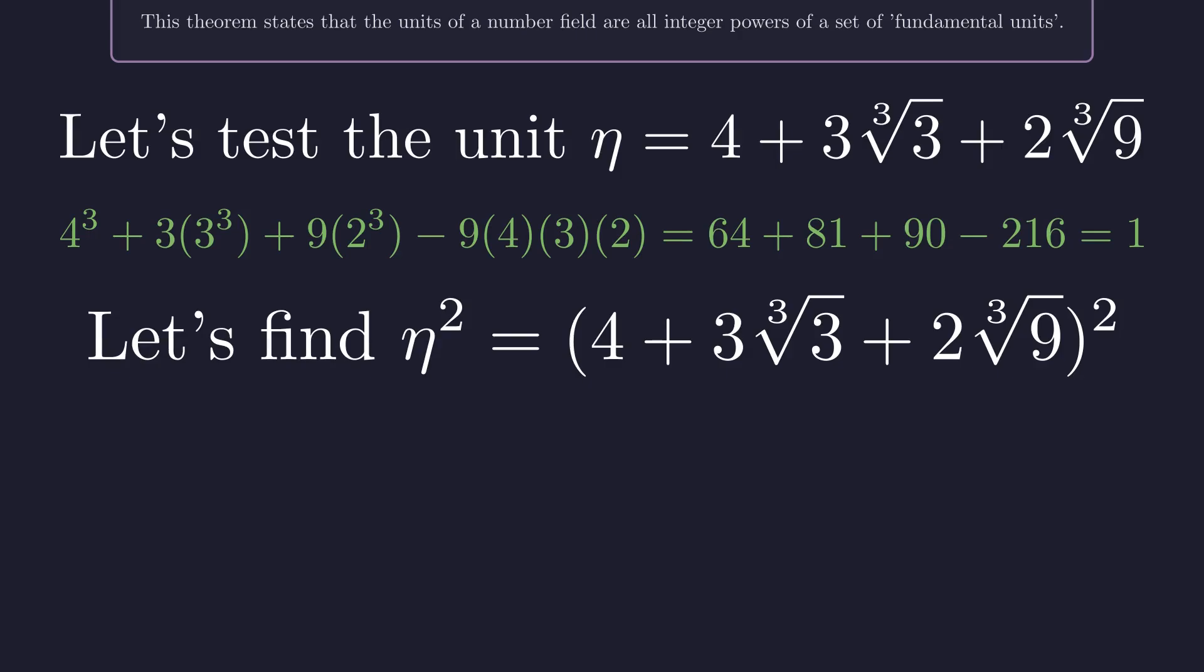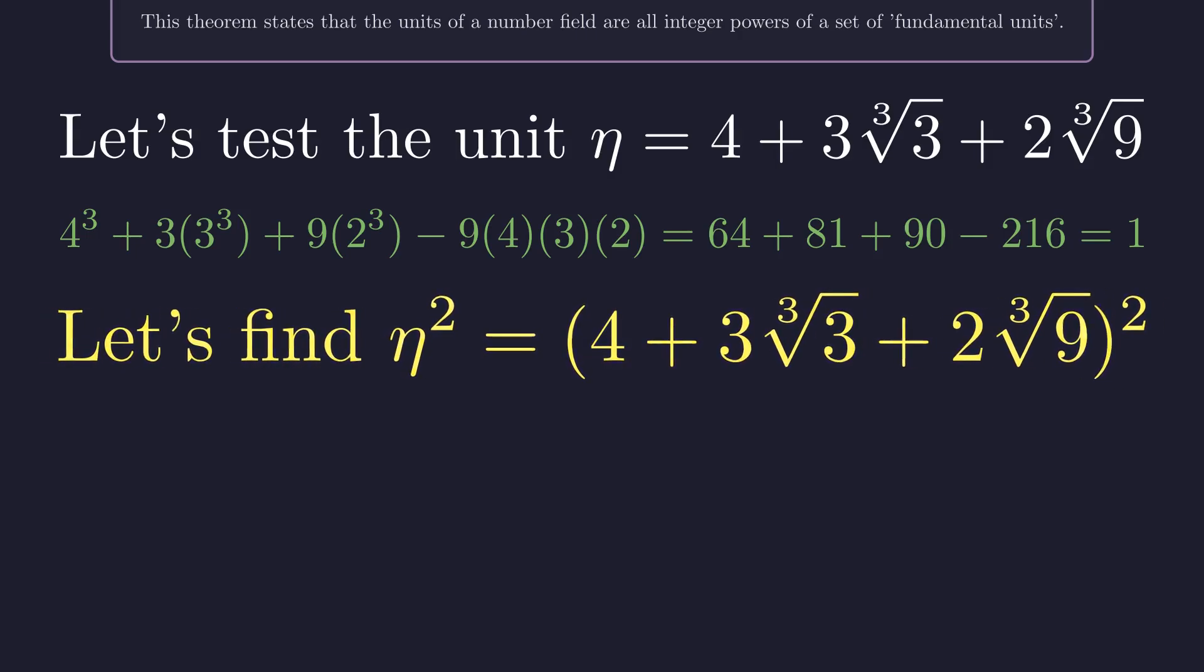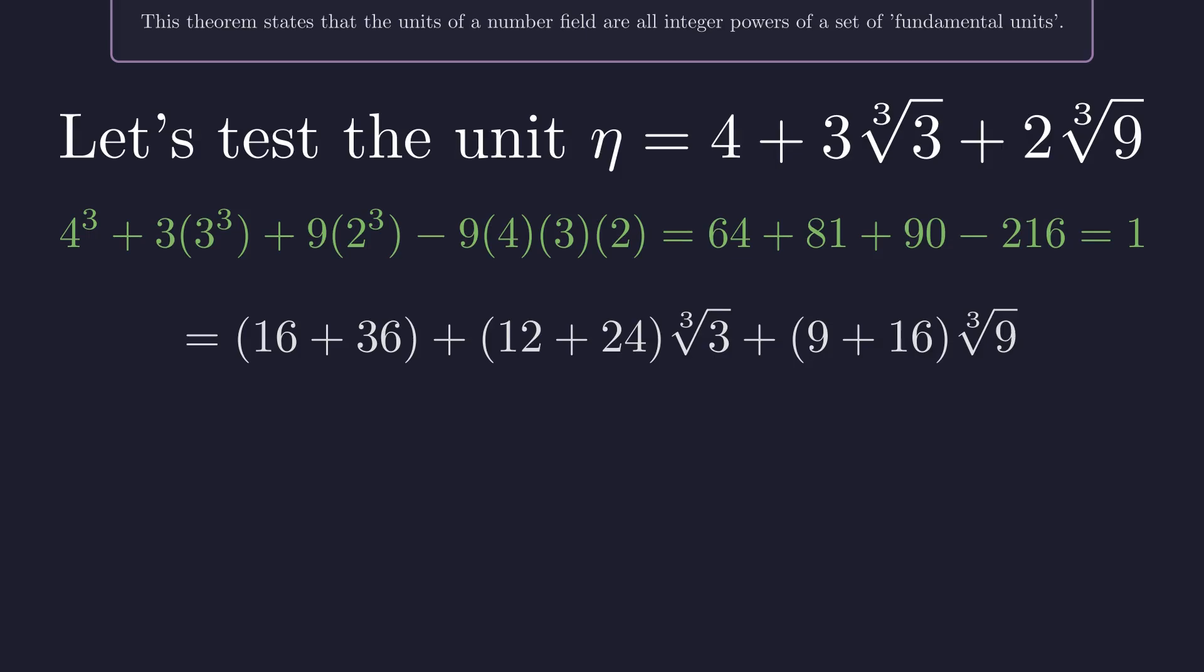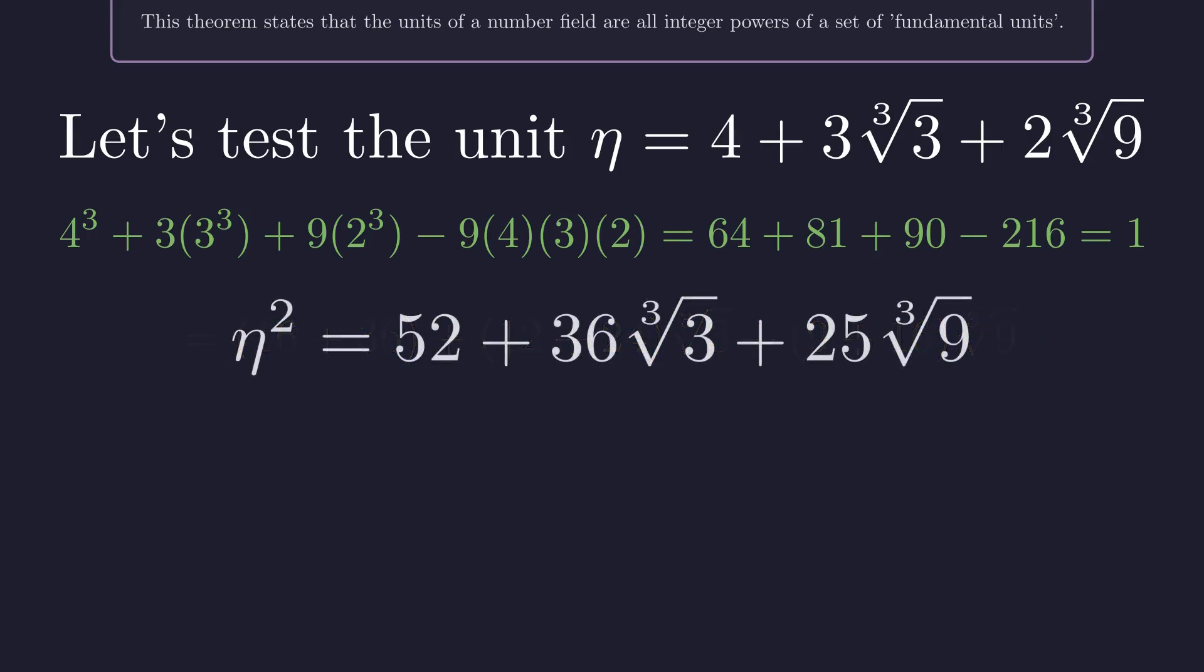The next logical step is to find the next unit by squaring eta, since the square of a unit is also a unit. We need to carefully expand this expression, remembering that the cube root of 27 is 3, and the cube root of 81 is 3 times the cube root of 3. After expanding and grouping the constant terms, the cube root of 3 terms, and the cube root of 9 terms, we get this simplified expression. Performing the additions, we find eta squared.